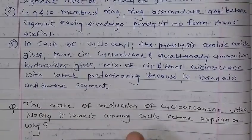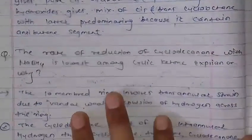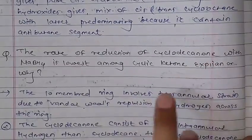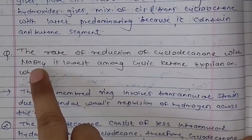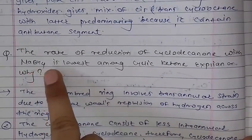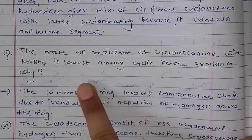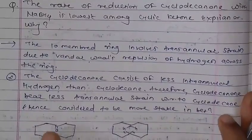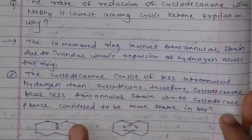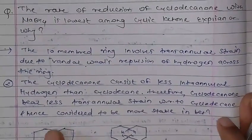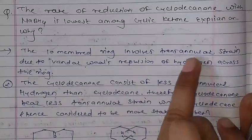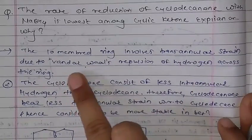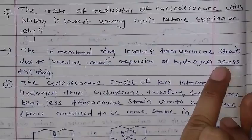The next topic is the rate of reduction of cyclodecanone. Explain why — for a 10-membered ring, other than a 6-membered ring, the 10-membered ring involves transannular strain due to van der Waals repulsion of the hydrogens across the ring.